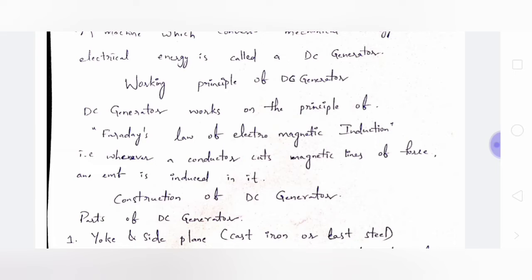To produce the magnetic field we use field windings. We use the armature to cut that magnetic field — the conductor cuts the magnetic field. With an external source we rotate the armature in the magnetic field produced by the field windings, and then an EMF is induced.